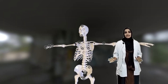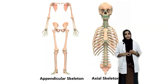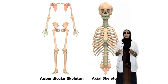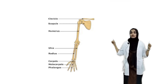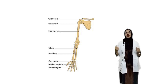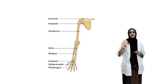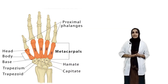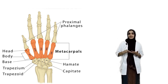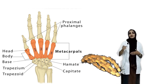Coming to the appendicular skeleton. The appendicular skeleton consists of the shoulder girdle and upper limb, and the pelvic girdle and lower limb. The shoulder girdle consists of the clavicle and scapula. The upper limb consists of the humerus, radius, ulna and eight carpals arranged in two rows of four. The metacarpals are the bones of the hand, five in number. Then fourteen phalanges, known as finger bones — three in each finger and two in the thumb.